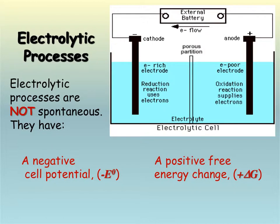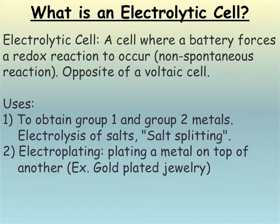So just to reiterate, electrolytic cells are not favored to happen. They have a negative cell potential and a positive delta G. We must use a battery of some sort in order to force the redox reaction, the non-spontaneous one, to occur.